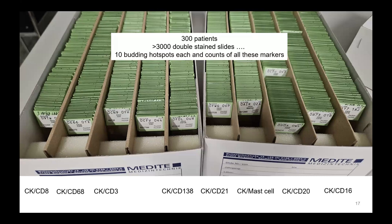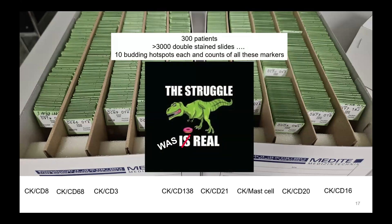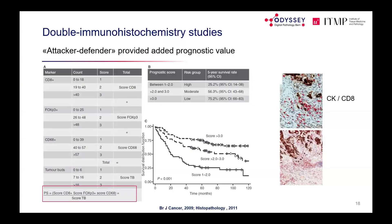In a first project in Basel involving 300 stage 2 colorectal cancer patients with double staining, 10 hot spots were evaluated per slide along every tumour border — counting both buds and immune cells. Combined bud count and CD8 immune cell count, along with FOXP3 and T-regulatory markers, could stratify patients into widely different outcome groups.